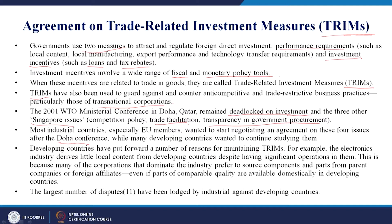Developing countries put forward a number of reasons for maintaining TRIMS. The largest number of disputes were found against developing countries — industrial giants like Japan and the US complained that developing countries were not following competitive policies. There were four cases against Indonesia, two against India. For example, in the electronics industry, large manufacturers would come into a new country but not use local content, preferring to source components from their parent companies or foreign affiliates.